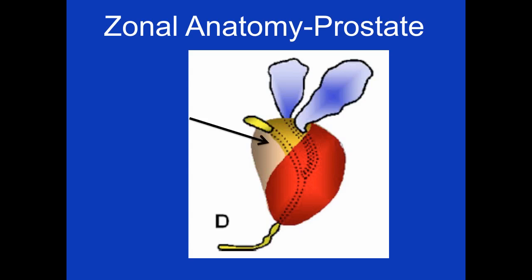On this image in brown has been added the anterior fibromuscular stroma. This is essentially devoid of any glandular tissue.